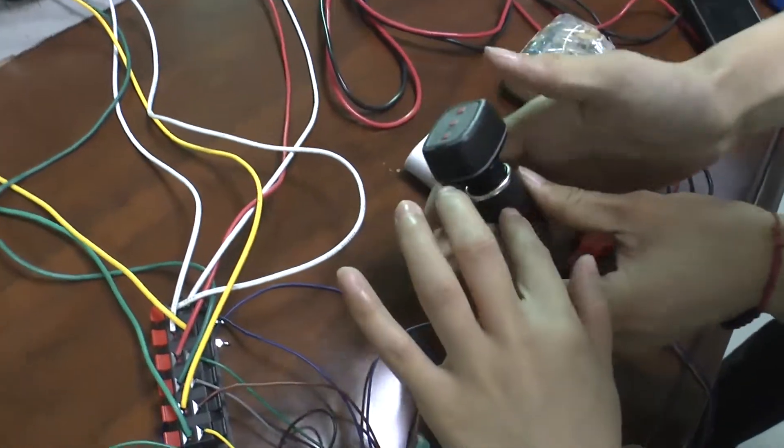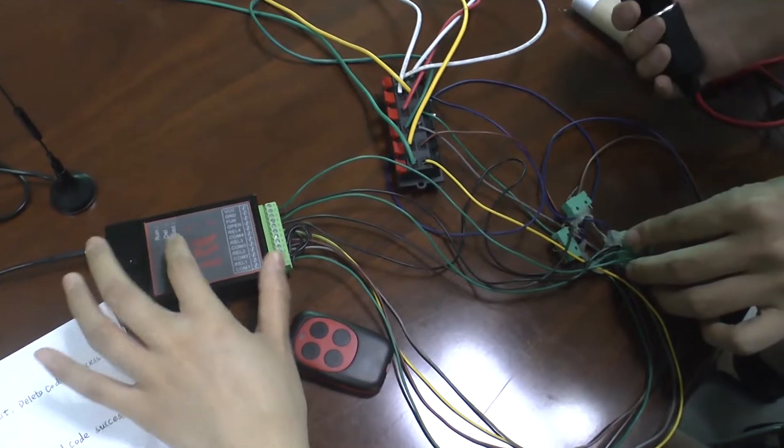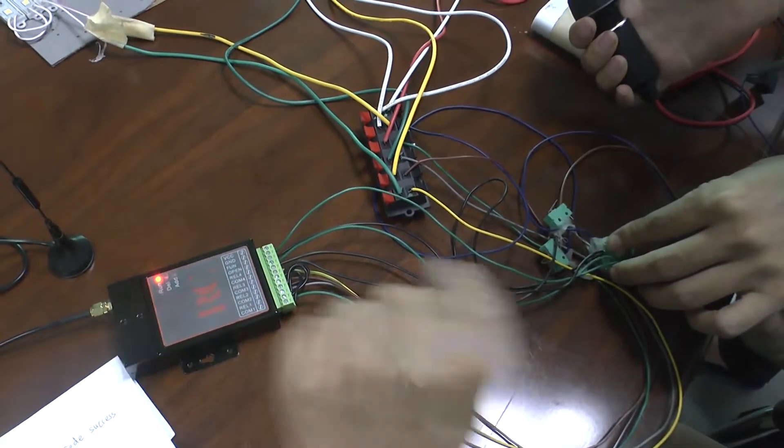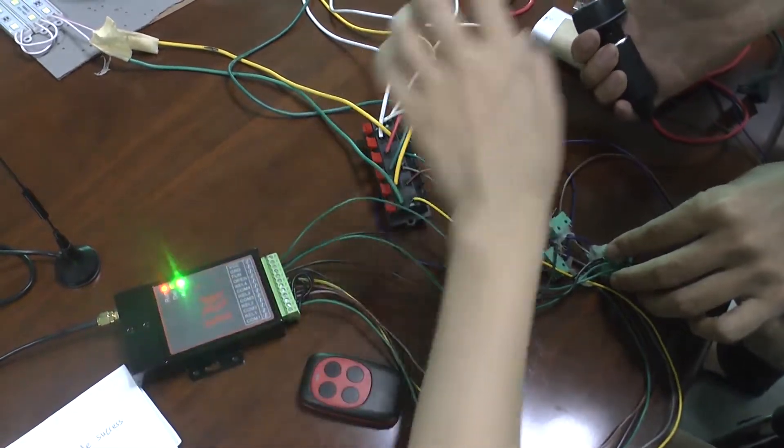Then, please insert the cigarette lighter switch. If you want to add code, the light will turn on green and flash, standing for the code succeeds.